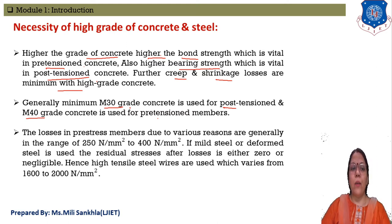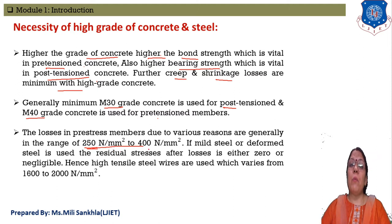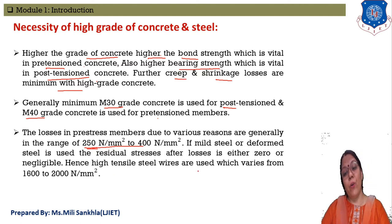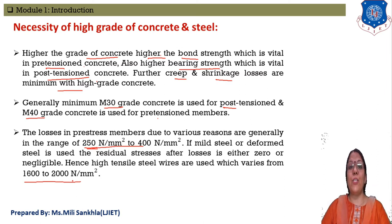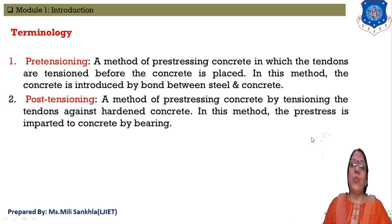The losses of prestress in a member generally vary in the range of 250 to 400 N/mm². This is an important MCQ point. These are the losses that occur during the age of prestress. If we use high-strength steel and concrete, the initial stress varies from 1600 to 2000 N/mm². Although losses increase with high-strength materials, in the final condition the net prestress remains higher.